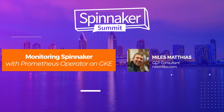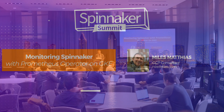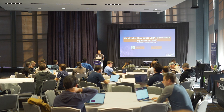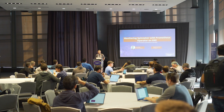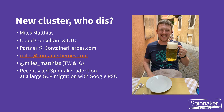I'm going to be talking about monitoring Spinnaker as an application and using Prometheus operator to do it. I'm going to talk about GKE specifically but a lot of this is applicable to any Kubernetes environment as well. I'm a cloud consultant, a partner at ContainerHeroes.com. I consult companies on various things and partner with the Google PSO team, spending most of this year leading the CI/CD effort on a large on-prem to GCP migration. That's where a lot of this information comes from, and I contributed back to open source as much as I could.